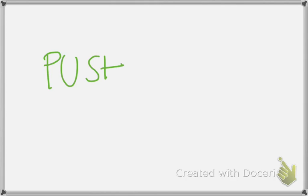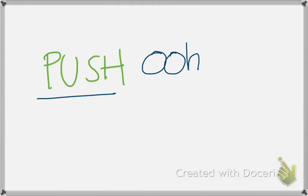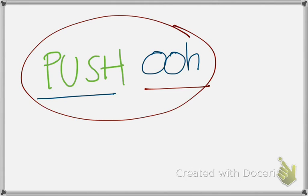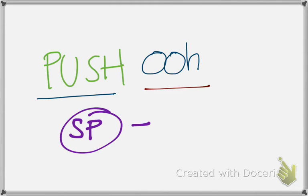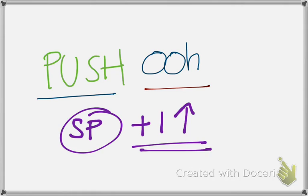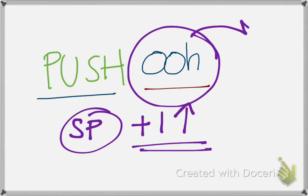To push data, we use the mnemonic PUSH in capital letters, followed by the address — say 00H. So what exactly happens after I give this operational code is: first, the stack pointer SP gets incremented by 1, and then the data stored in 00H is transferred into the stack, which is the internal memory of the RAM.